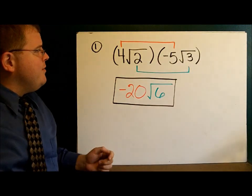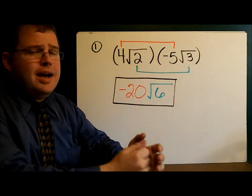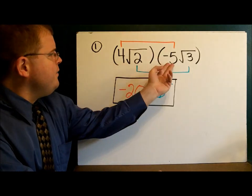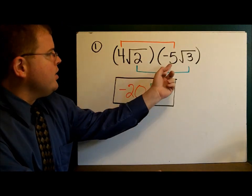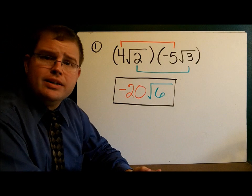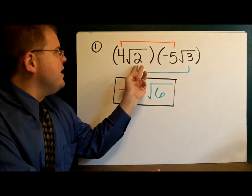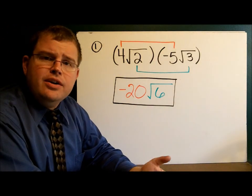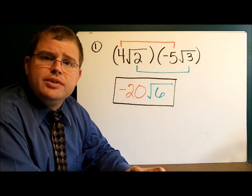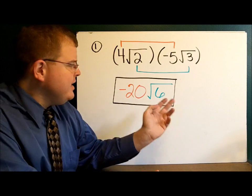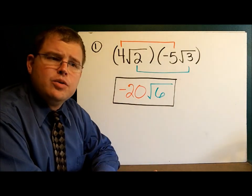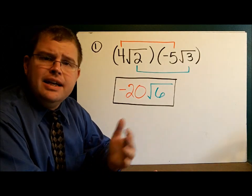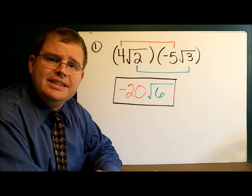In our first example, we have 4 square roots of 2 times negative 5 square roots of 3. We multiply the coefficients — the outsides — 4 times negative 5 is negative 20. And we multiply the numbers on the inside: 2 times 3 is 6. So our answer is negative 20 square roots of 6. In this case, I can't simplify that square root any — there are no perfect squares that go into 6 — so that's my final answer.